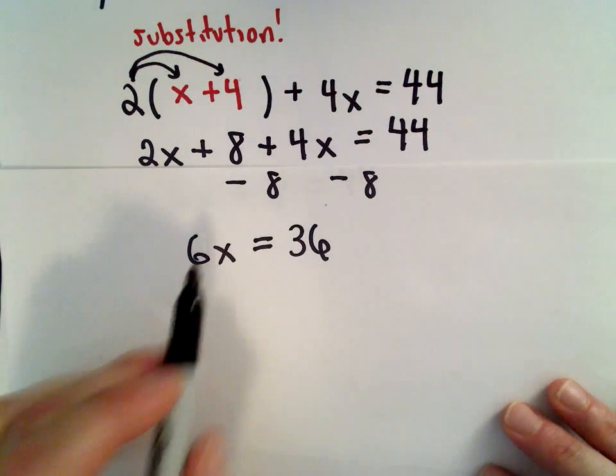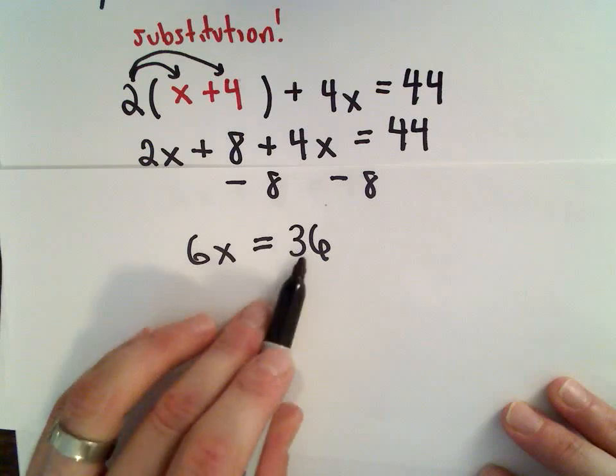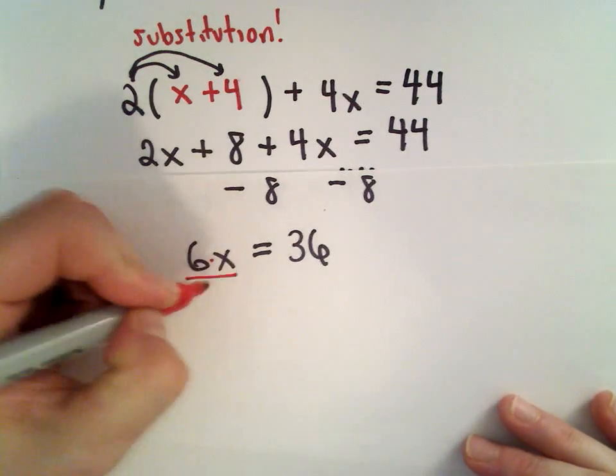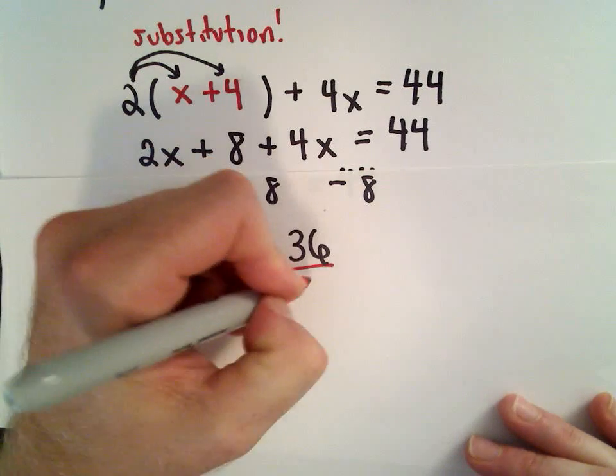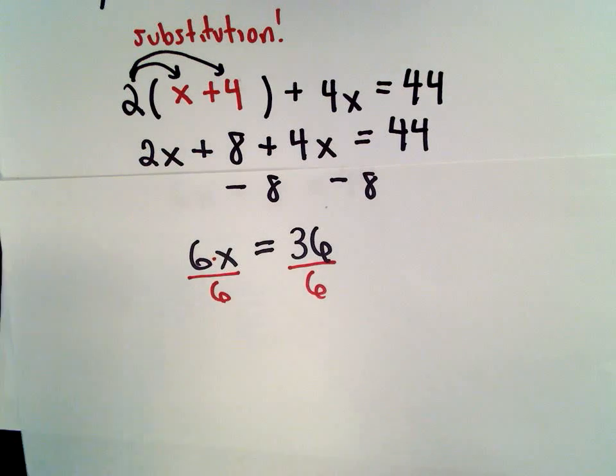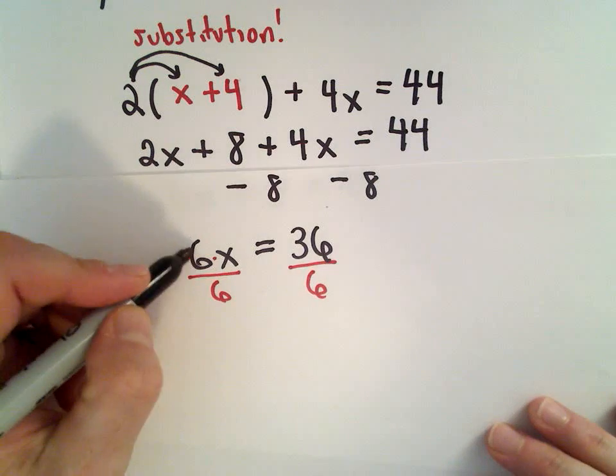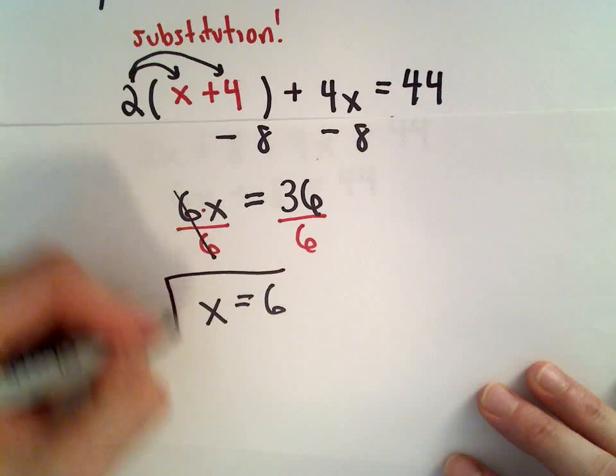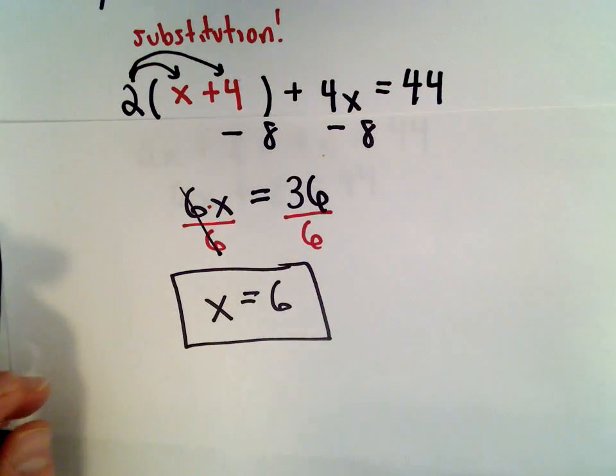So I've got 6 multiplied by x equals 36. To get x by itself, since I'm multiplying by 6, I'm going to divide both sides by 6. So 6 divided by 6 is just x, and 36 divided by 6 gives me x equals 6.